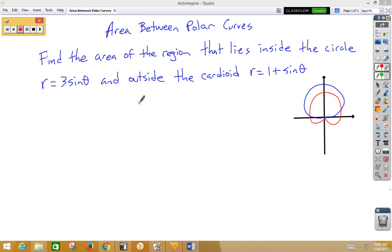In this video, we're going to do area between polar curves. In this example, find the area of the region that lies inside the circle r equals 3 sine theta and outside the cardioid r equals 1 plus sine theta. Over here, I've made a rough sketch of the graph, and what we're looking at is inside the circle but outside the cardioid. That would be this green area in here.